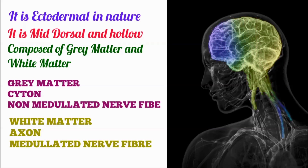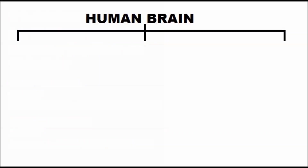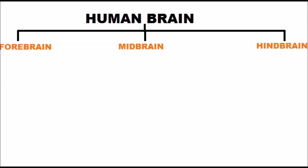The human brain consists of three parts: forebrain, midbrain, and hindbrain. The human brain is also called the encephalon, which means it is present inside the cranium.